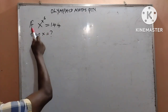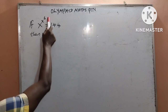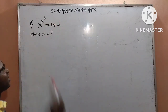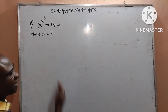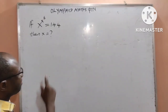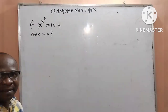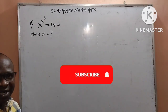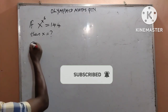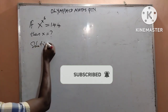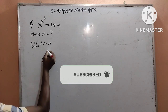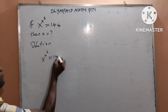If x to the power of x to the power of 6 is equal to 144, what is the value of x? It is going to be a brief video. If it is your first time stopping by, kindly subscribe to my channel for my exciting videos. In solution to this question, we are given x to the power of x to the power of 6 is equal to 144.